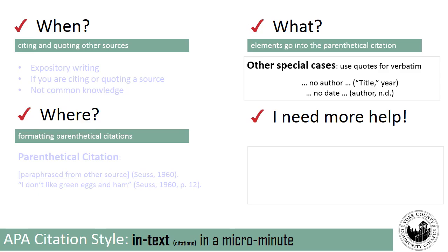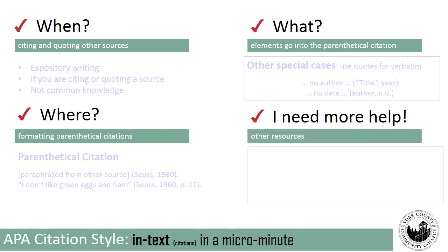In special cases where there's no author, include the title inside quotation marks and the year of publication. If there's no date, you can use n.d. to indicate that there is no date listed for that source. In general, you use whatever elements you have in the order of APA citation style.